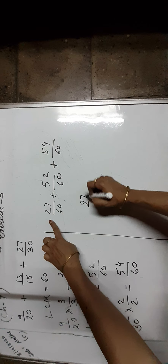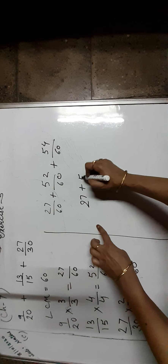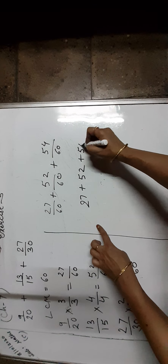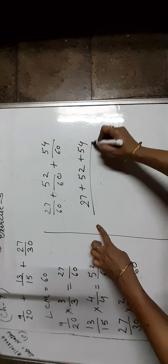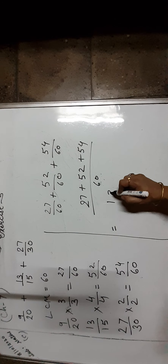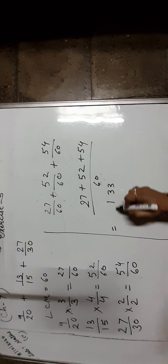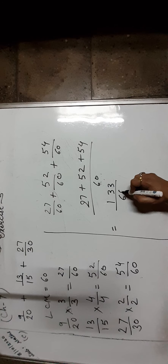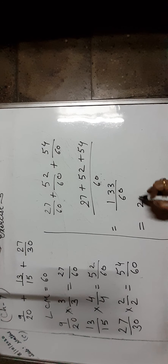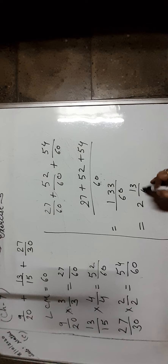Now, 27 plus 52 plus 54 upon 60, which is equal to 133 upon 60. It should be written as 2 and 13 upon 60.